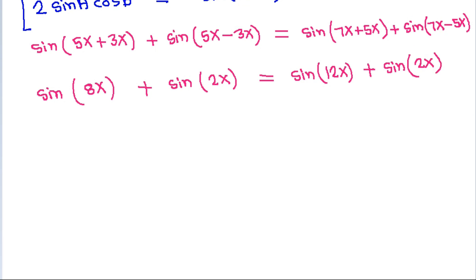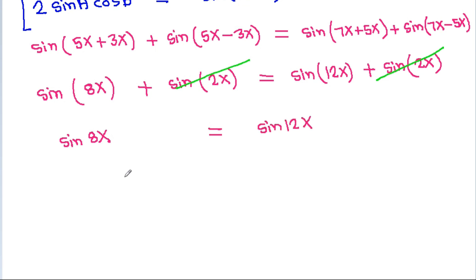sin(2x) cancels from both sides, leaving sin(8x) equals sin(12x), which can be rearranged as sin(12x) minus sin(8x) equals 0.